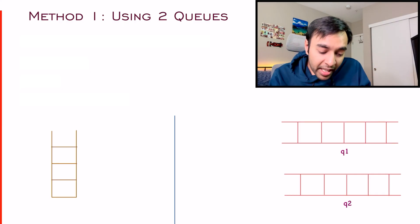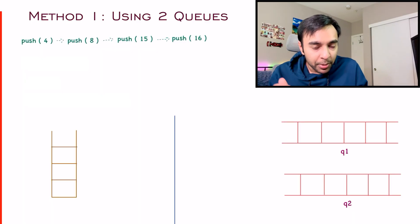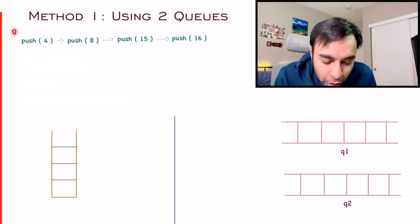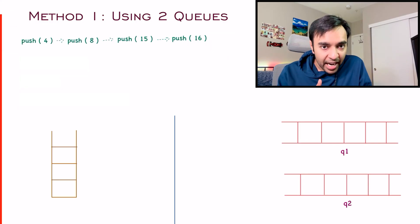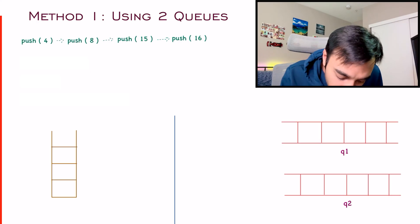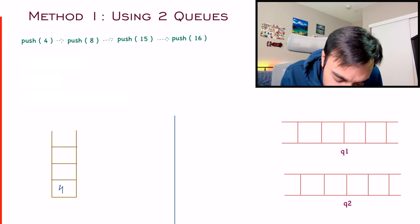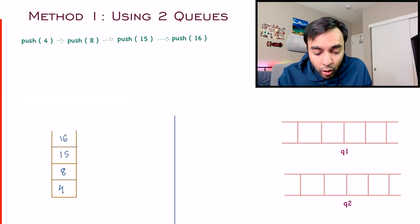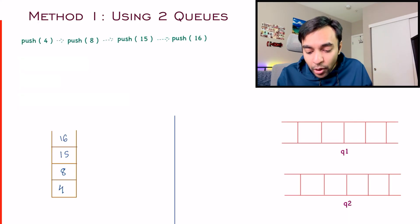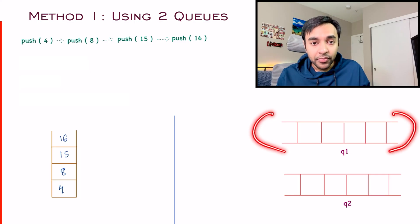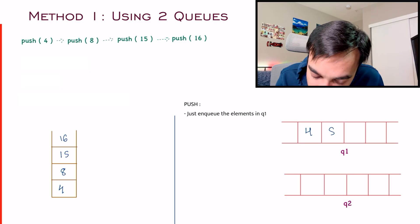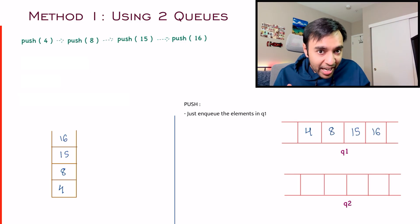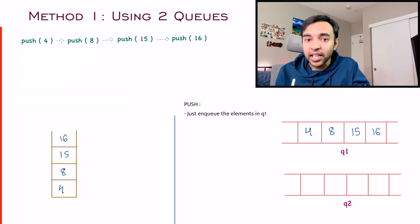Let's say I have four push operations: push 4, 8, 15, and 16. In the stack, elements go in as 4, 8, 15, and 16. In the queue data structure, when I add these elements they also get added as 4, 8, 15, and 16. Notice that the elements are linear in both data structures.